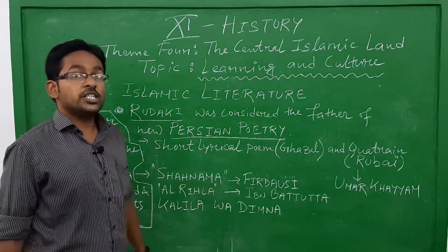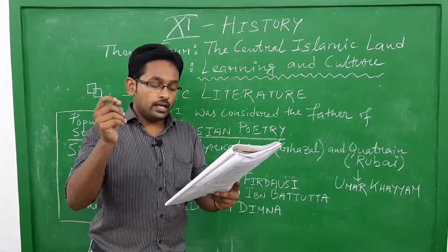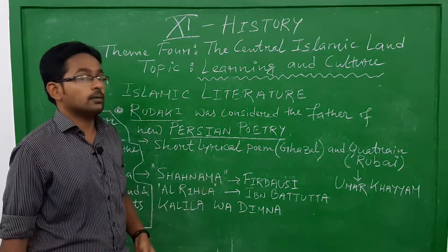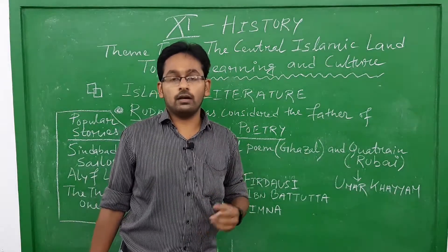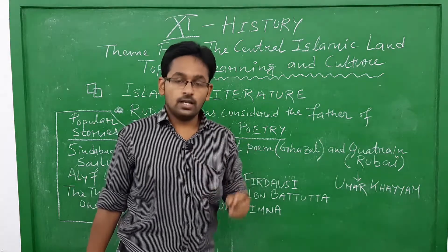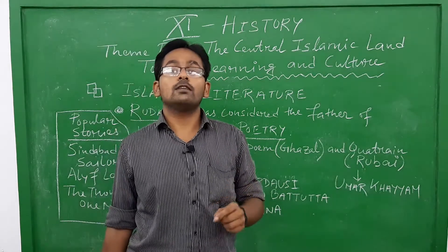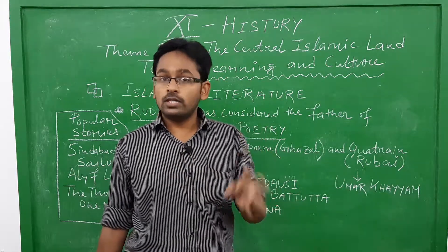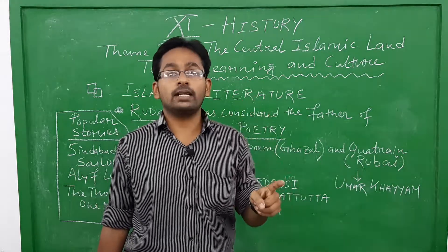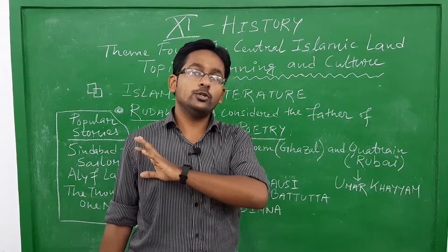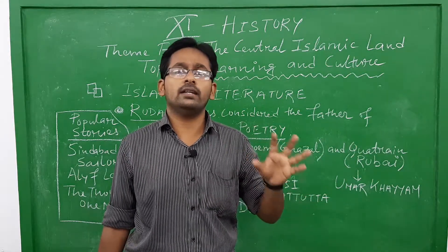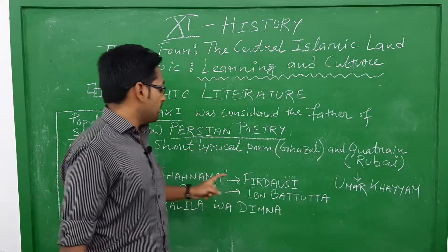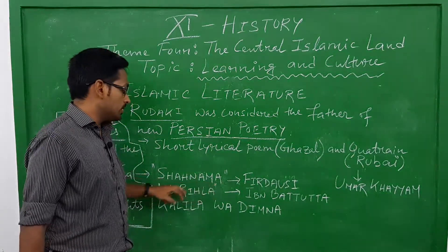There is another book called Shah Nama, written by Firdausi, and it is considered a masterpiece of Islamic literature. Firdausi came to India with Sultan Mahmud of Ghazni — Ghazni is present-day Afghanistan. Sultan Mahmud of Ghazni attacked India 17 times, plundered temples including the famous Somnath Shiva temple of Gujarat, and took immense gold, jewelry, diamonds, and silver from India.